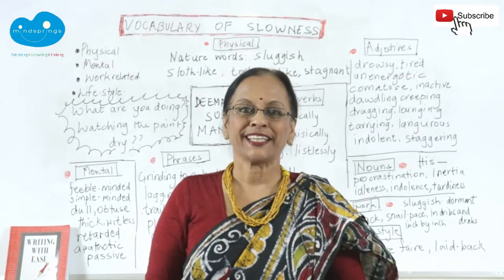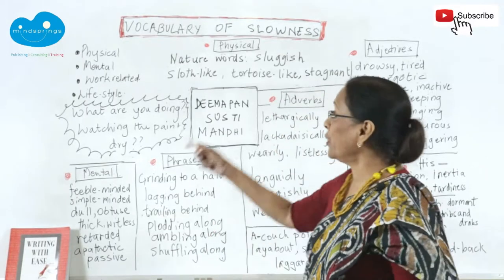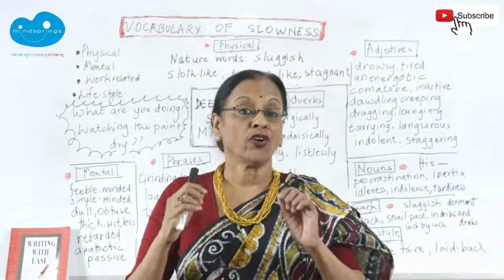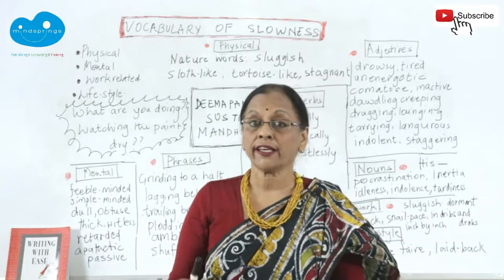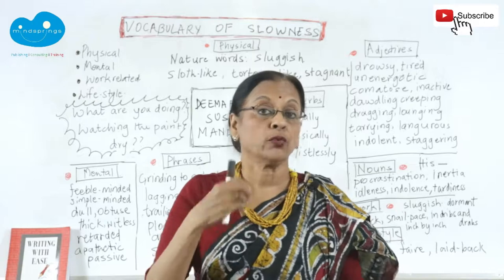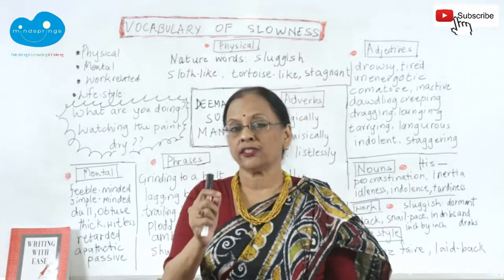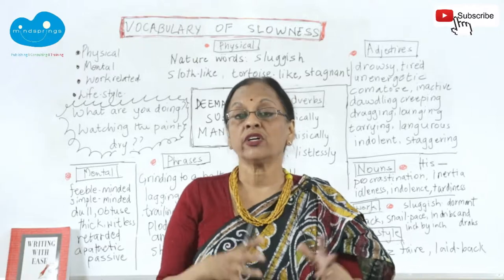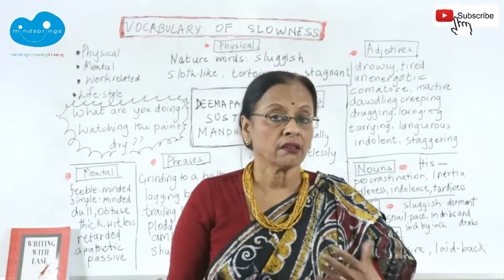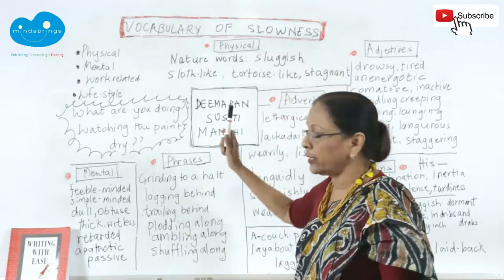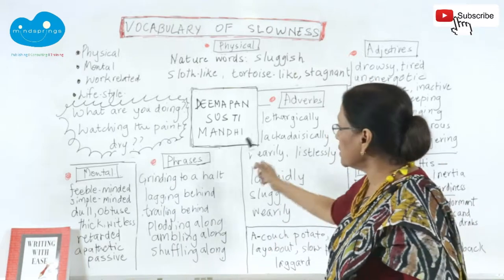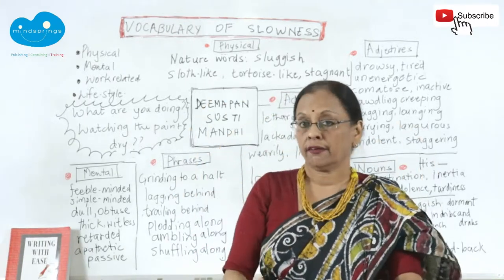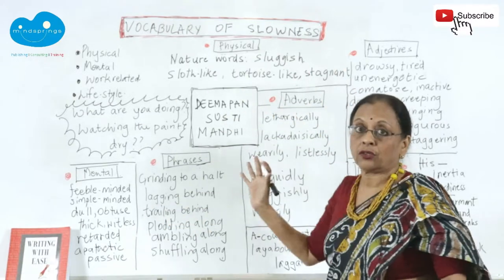Hello, this is Usha Pandit, your MindSprings English teacher. Today we are going to do the vocabulary of slowness. यह खास करके जो railways, banks, SSE और दूसरे जो competitive exams करते हैं उनके लिए खास है, क्योंकि इसमें बहुत सारा vocabulary है। Vocabulary एक ऐसी चीज है जो context में सीखना चाहिए। अगर context के बाहर आप सीखोगे, word meaning सीखोगे, dictionary से, तो बड़ी गलतियाँ हो जाएंगी। इसलिए जरूरी है कि हम context पकड़ें। अभी हिंदी में जो words हैं वो हैं: धीमापन, सुस्ती और मंदी।